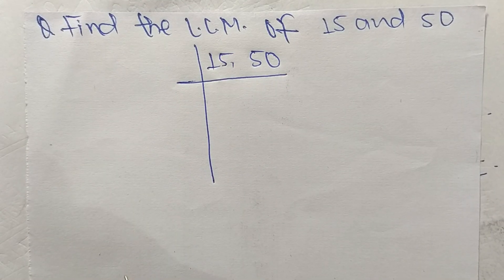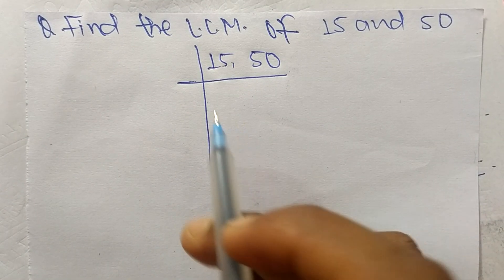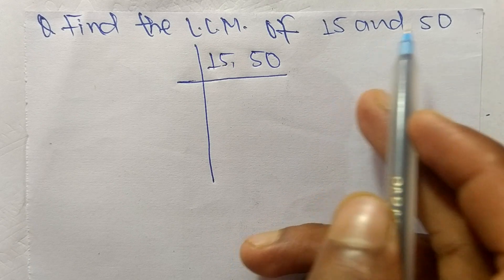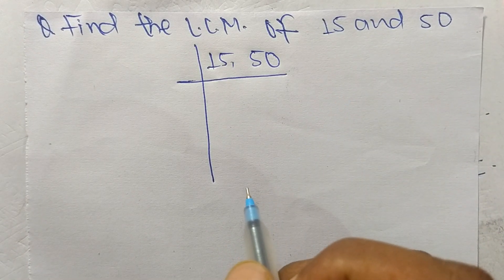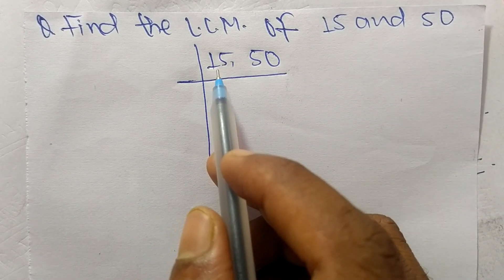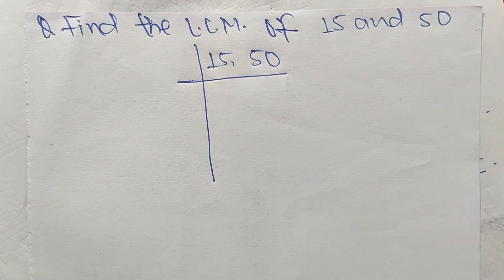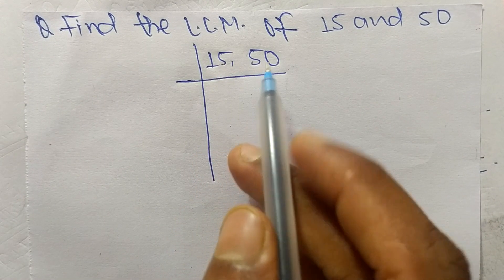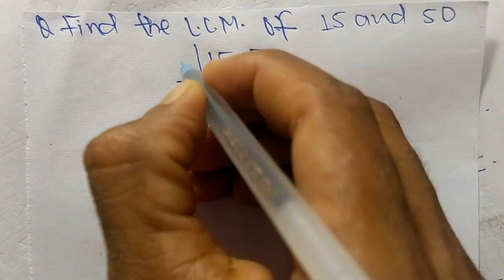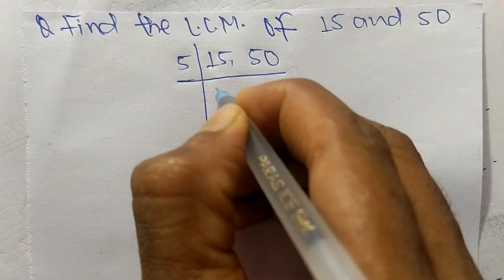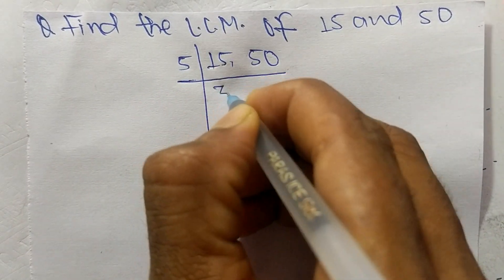Today in this video we shall learn to find the LCM of 15 and 50. First of all, choose the lowest number that can exactly divide 15 and 50. That number is 5, so 5 times 3 equals 15.